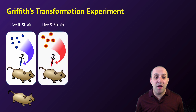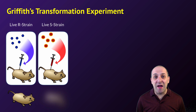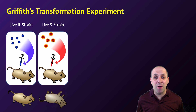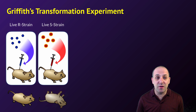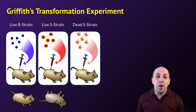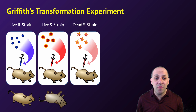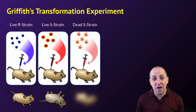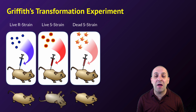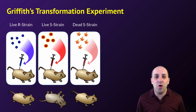When Griffith injected mice with live S strain bacteria, the mice died. But again, that's exactly what Griffith expected based upon his understanding of R strain and S strain bacteria. When Griffith injected mice with heat-killed S strain bacteria, the mice survived. This makes perfect sense because those bacteria were dead when Griffith injected them, so they couldn't cause the disease.